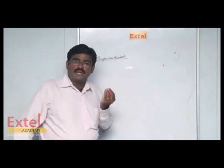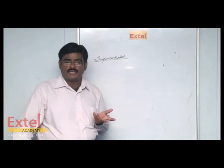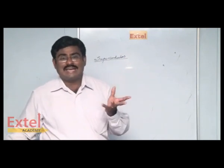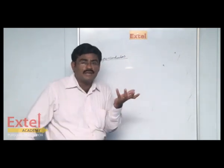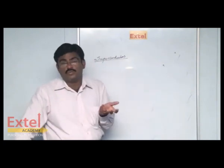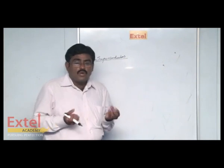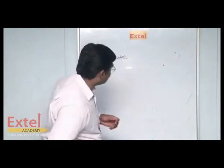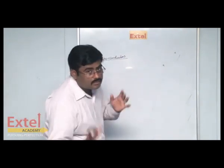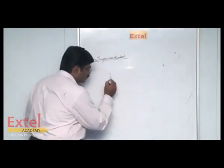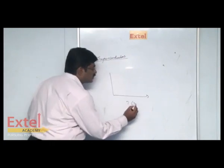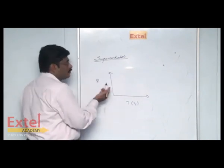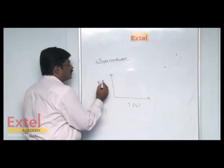The first scientist, Kamerlingh Onnes, discovered superconductivity in the year 1911. He maintained the liquid metal mercury at a temperature of 4.2 Kelvin, and mercury lost its entire resistance and started behaving like a superconductor. On a graph, the x-axis represents temperature and the y-axis represents the resistance of mercury in ohms.